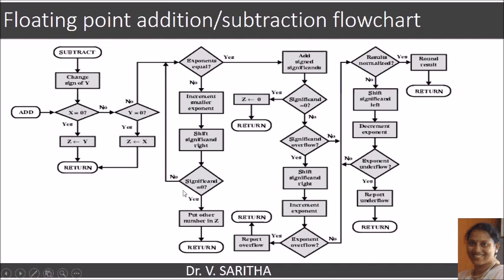At any point during this process, if the significand becomes zero, we put the other number in z as the answer. If we are shifting the value of x, then y will be the answer; if we are shifting the mantissa part of y, then x will be the answer. We then stop the process.